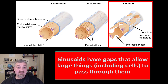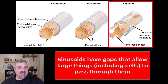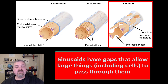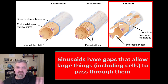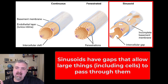Where might you find sinusoids? The liver — it has to move unbelievable amounts of things, and the plasma proteins being made there have to squeeze out. Bone marrow makes cells, and those cells have to fit through these openings to get into your circulatory system. Lymph nodes also have sinusoids, but those carry lymph, not blood. Those are the key areas, though you'll see sinusoids in other places too.